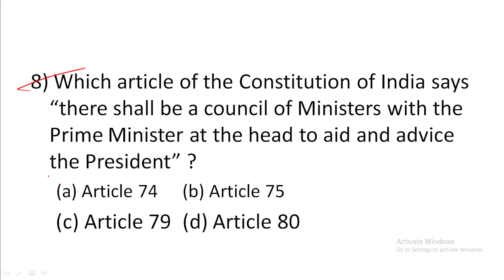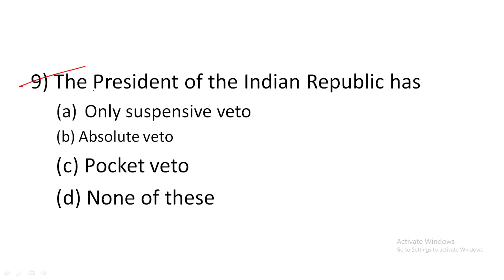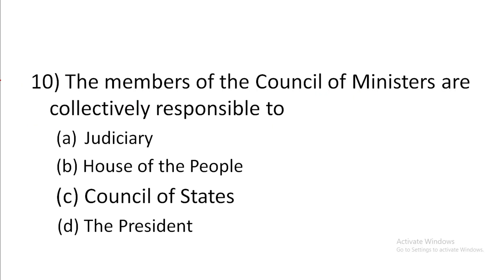Answer to Question 8 is A: Article 74. Question 9: The President of the Indian Republic has — answer is A: only suspensive veto. Question 10: The members of the Council of Ministers are collectively responsible to — answer is B: the House of the People.